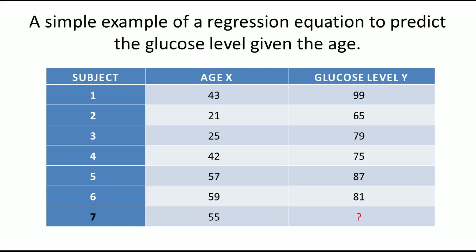To understand this model, we will take one very simple example. Here, six examples are given to us, and there are two variables: one is called age and another one is called glucose level. I have given x for age and y for glucose level. Using the regression model, we need to predict the value of glucose level.